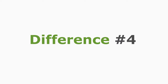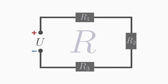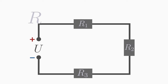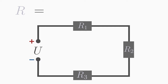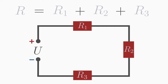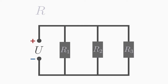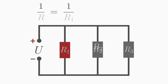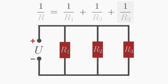Difference number four: the total resistance R of a series circuit is the sum of the individual resistances: R is equal to R1 plus R2 plus R3. In a parallel circuit, however, the total resistance R is not the sum of the individual resistances. The following relationship applies: the reciprocal total resistance 1 over R is the sum of the reciprocal resistances, 1 over R1 plus 1 over R2 plus 1 over R3.